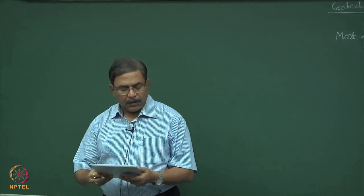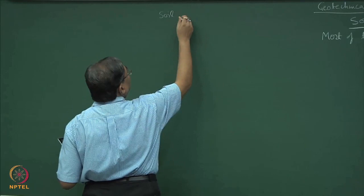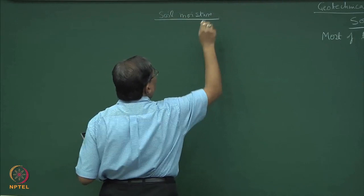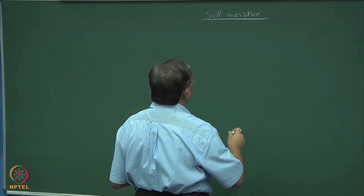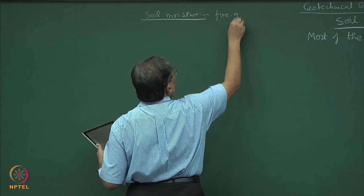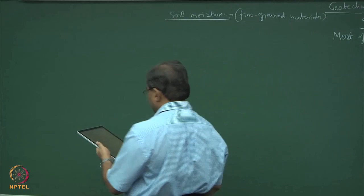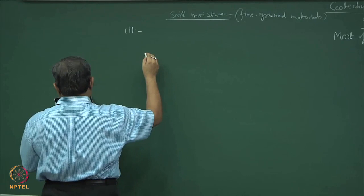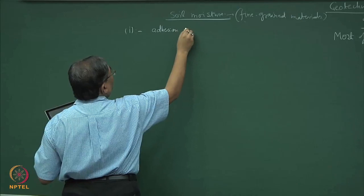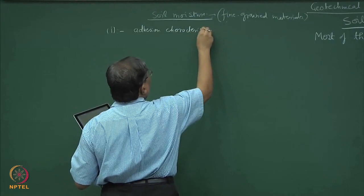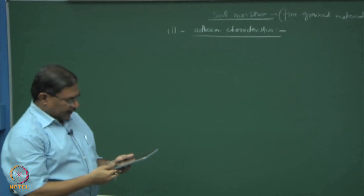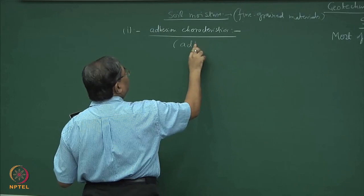Soil water is a general term and soil moisture is a particular term. Soil moisture is valid mostly for fine-grained materials, not for coarse-grained materials. The first category of soil moisture is characterized by adhesion — the mechanism of adhesion of moisture on fine-grained materials is called adsorption; sometimes we also call this adsorbed water.